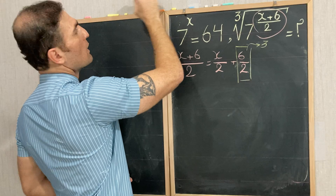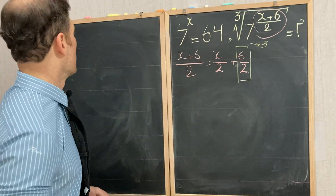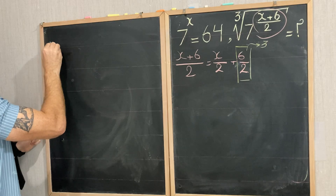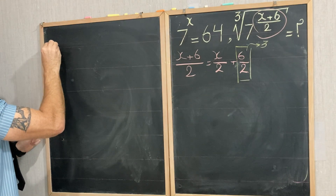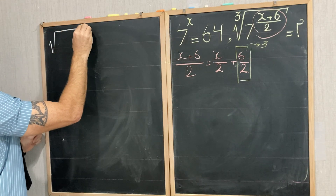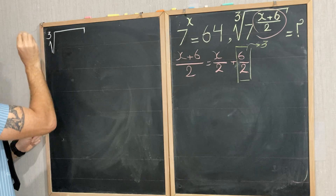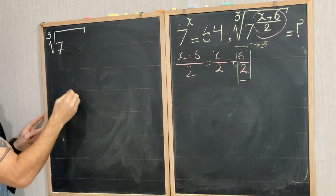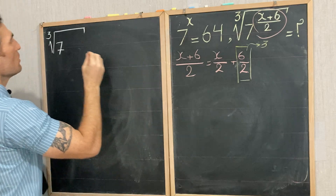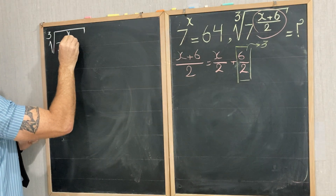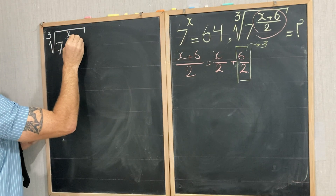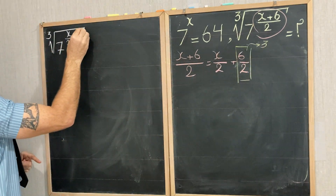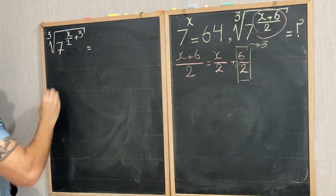Let me rewrite this expression: the cube root of 7 to the power of x over 2 plus 3. This is the first step.